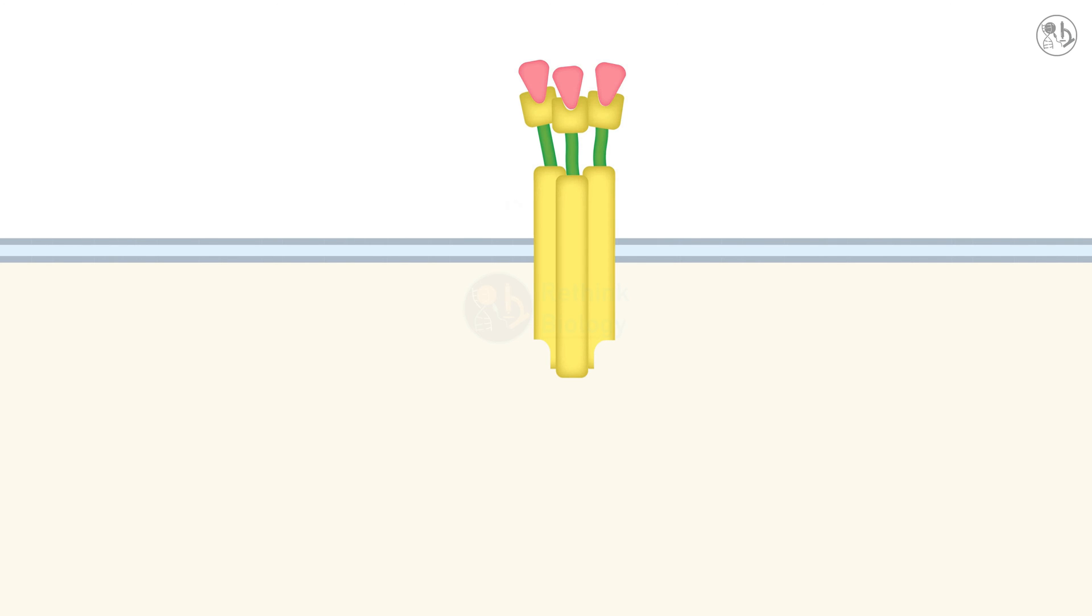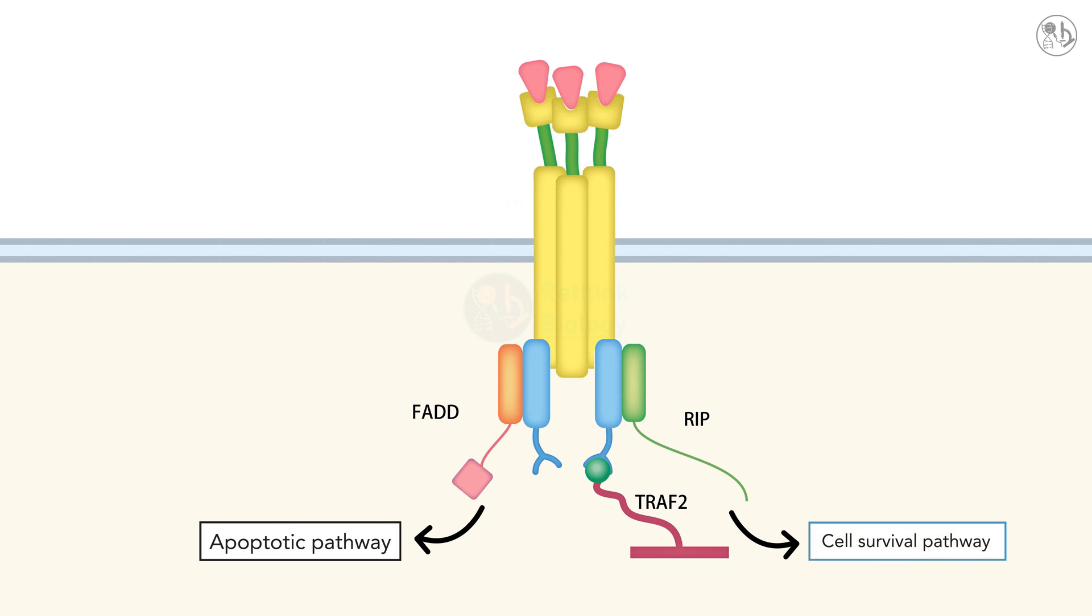The DD recruits another protein called TRADD, which contains both DD and N-terminal domain. TRADD acts as a molecular switch that determines the fate of the cell. Depending on the cellular context, TRADD can either form a complex with FADD leading to apoptosis, or a complex with TRAF2 and RIP, leading to cell survival.